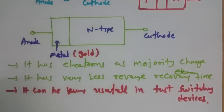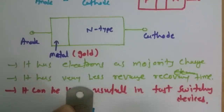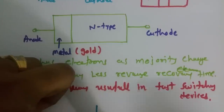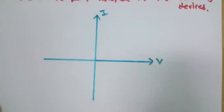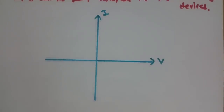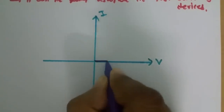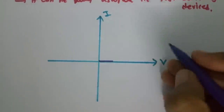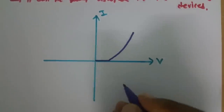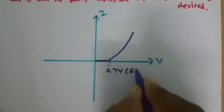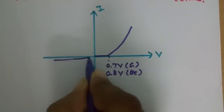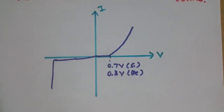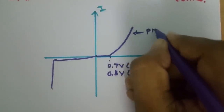Let us understand the VI characteristic of the Schottky Barrier Diode and observe the difference. Here I have shown voltage on one axis and current on the other. In a P-N junction diode's characteristic, current starts to conduct after the potential barrier voltage — 0.7V for silicon and 0.3V for germanium. In reverse bias, very minor current flows and after breakdown, current flows.